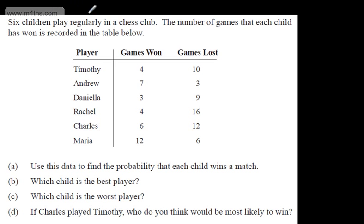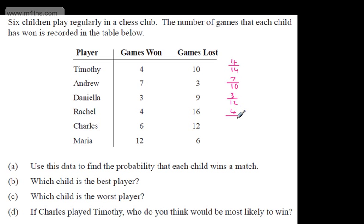Six children play regularly in a chess club. The number of games each child has won and lost is recorded in a table: Timothy, Andrew, Daniela, Rachel, Charles and Maria. In part A, we use this data to find the probability that each child wins a match. We need to be careful — games won plus games lost gives the total. For Timothy it's 4 and 10, total of 14, so the probability he wins is 4 out of 14. Andrew: 7 and 3, so 7 over 10. Daniela: 3 over 12. Rachel: 4 out of 20. Charles: 6 out of 18. Maria: 12 out of 18.